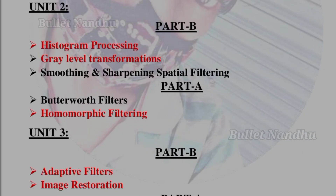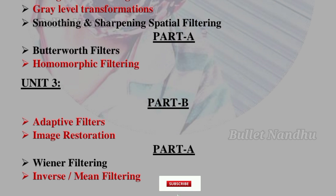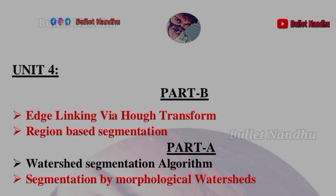Unit 3 Part B covers adaptive filters and image restoration. Unit 3 Part A covers the inverse mean filter. Unit 4 Part B covers edge linking via Hough transform.